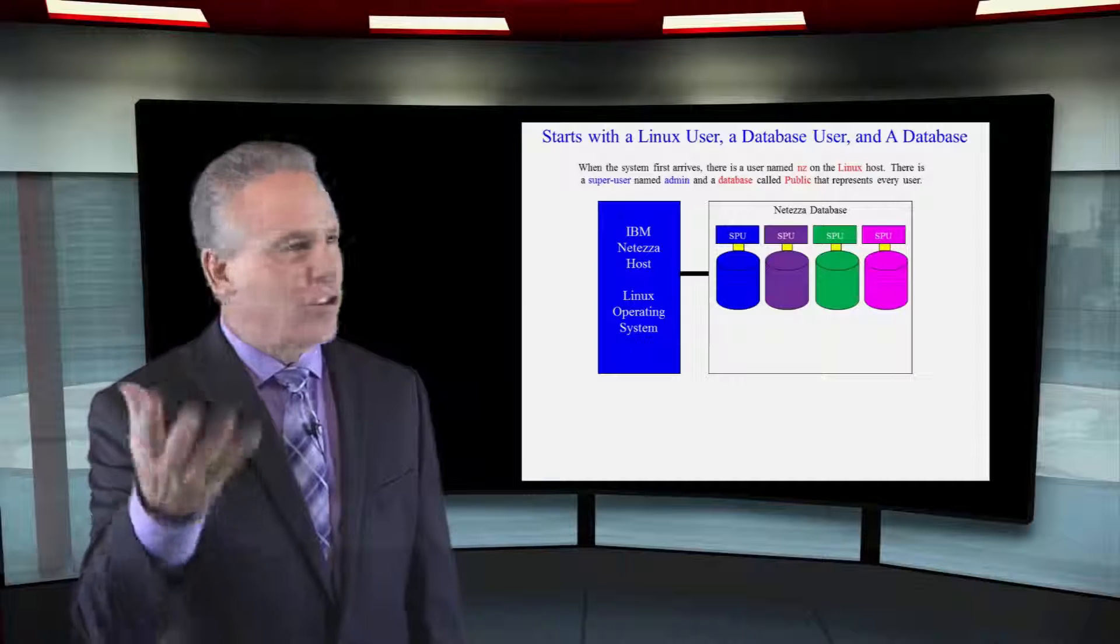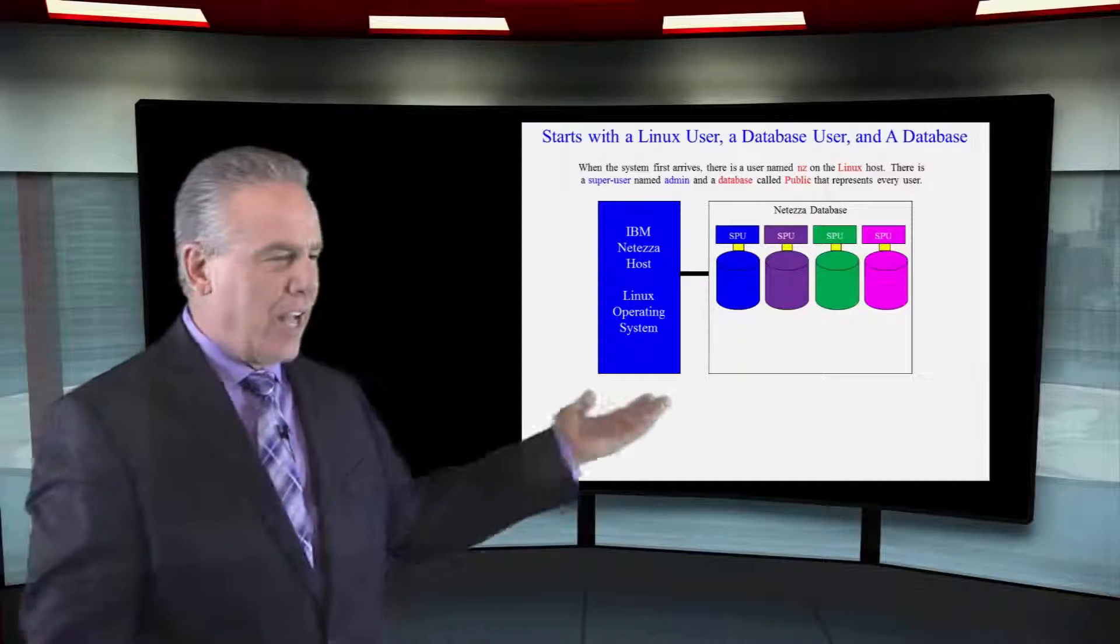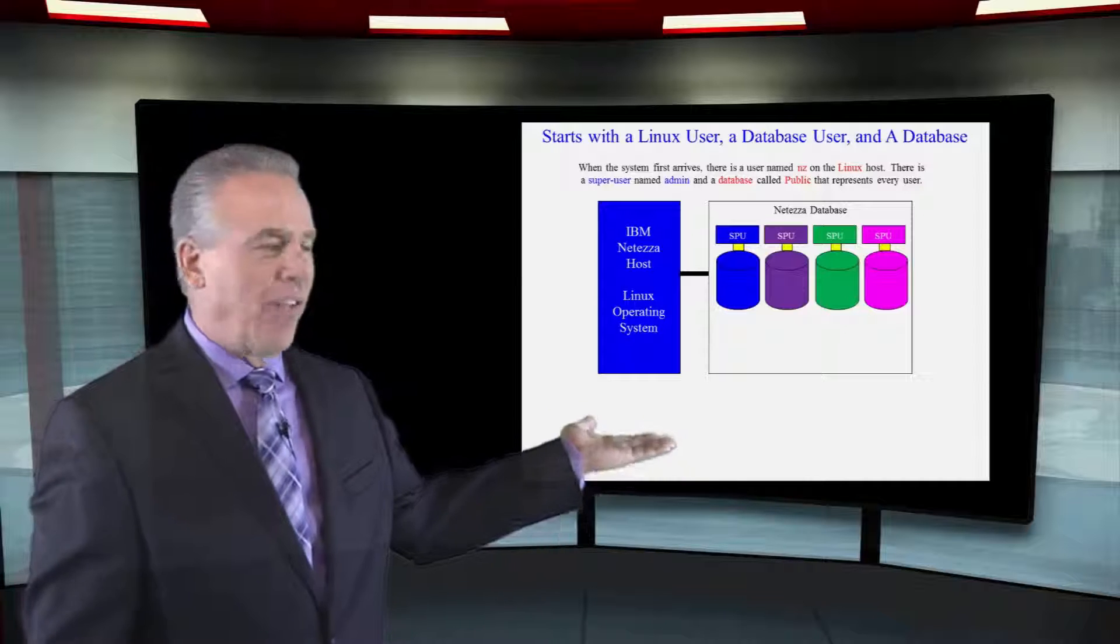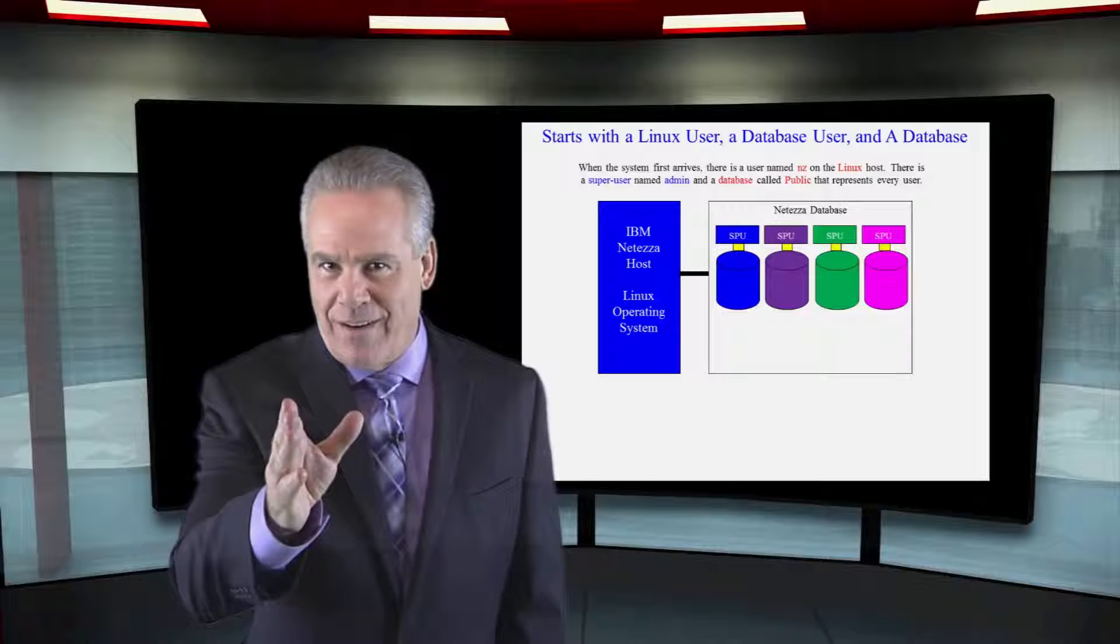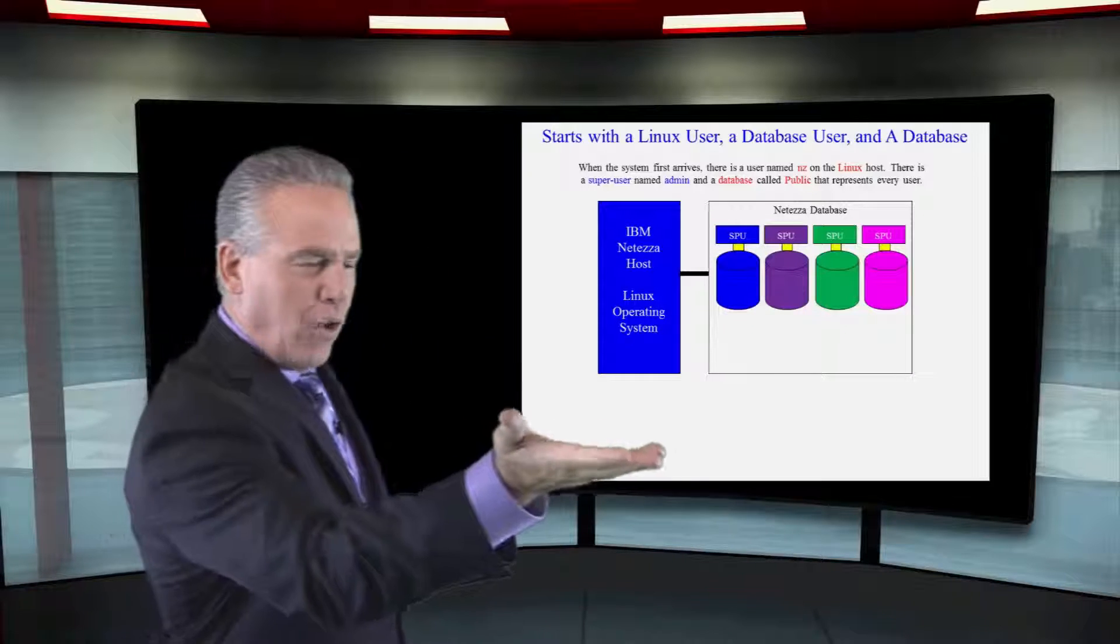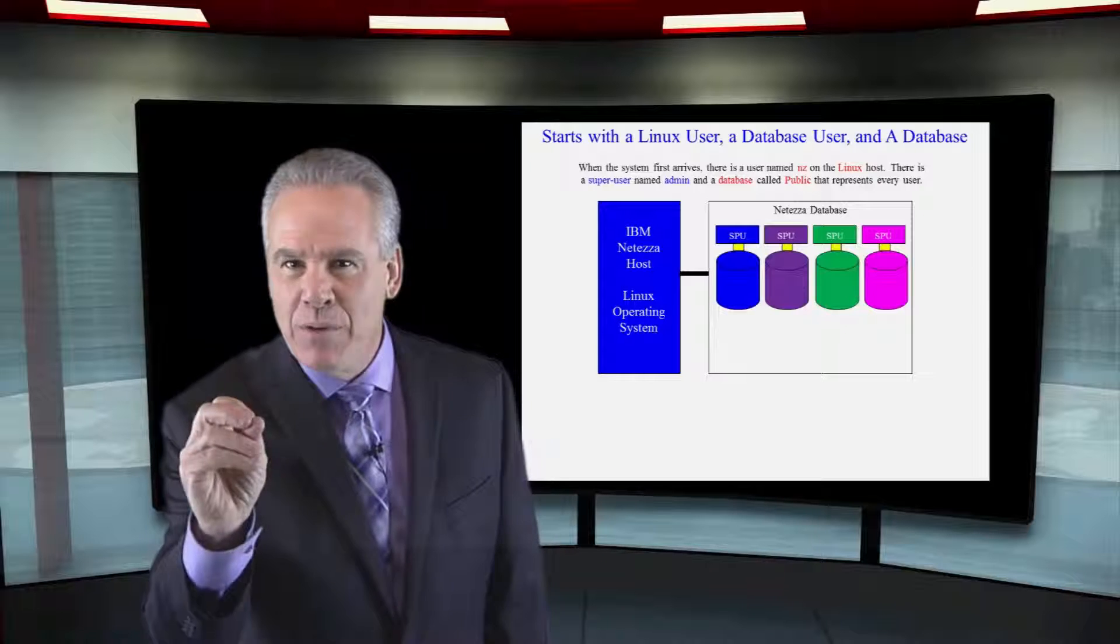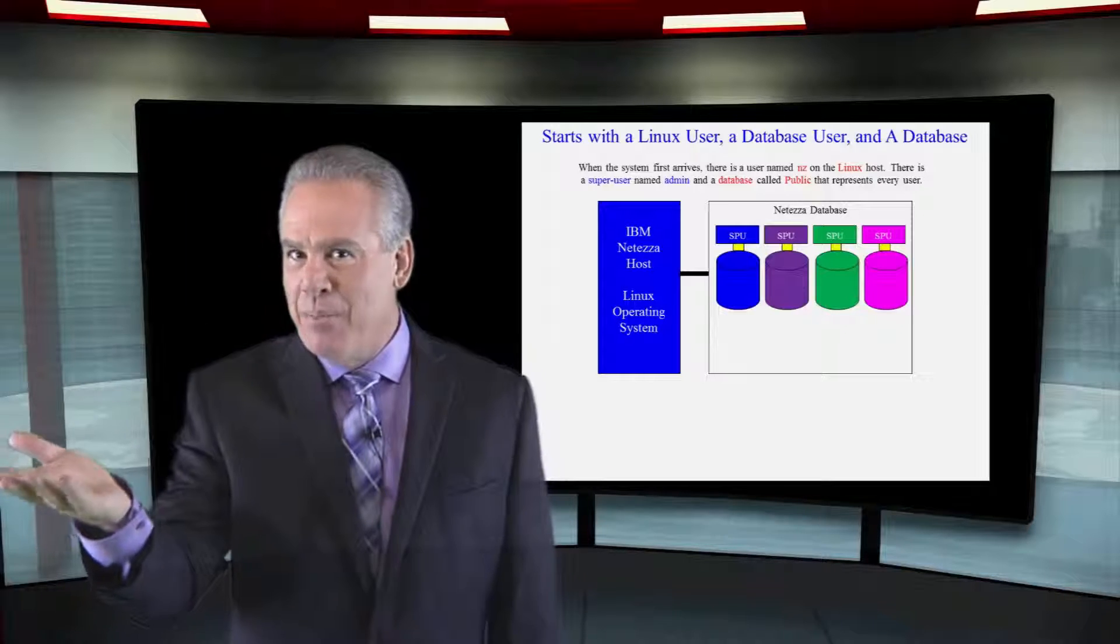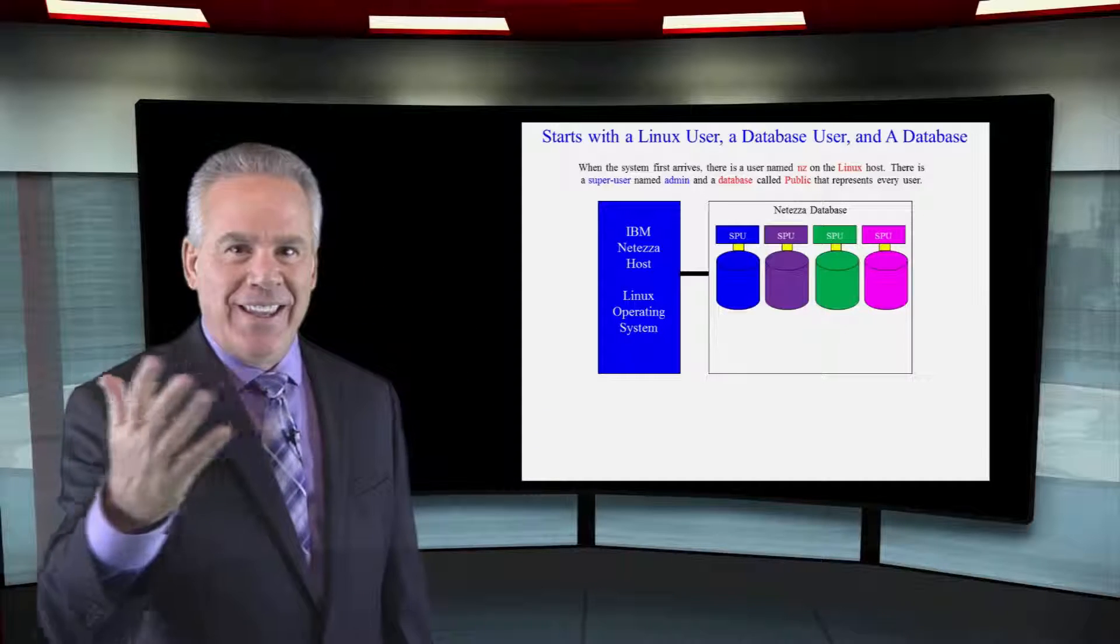When your Netezza first comes to your company, it's got a couple things on it. It's got the Linux operating system on the host, and they have got one user over there. Then they've got one user on the database who's called admin, and they've got one database called public. Every time a user is added, they're added to the public database. And that's how it all begins.